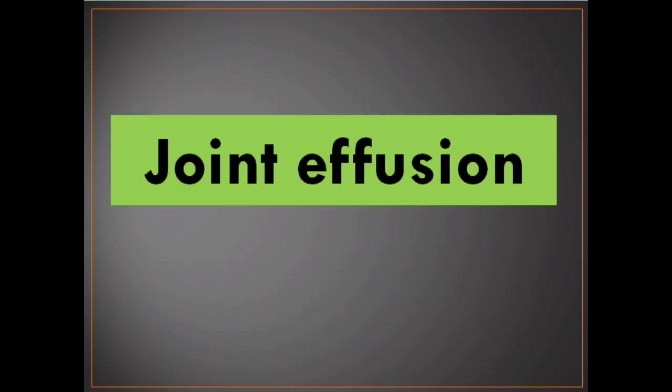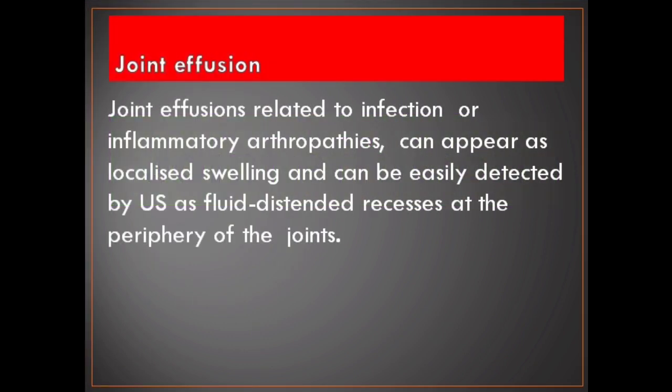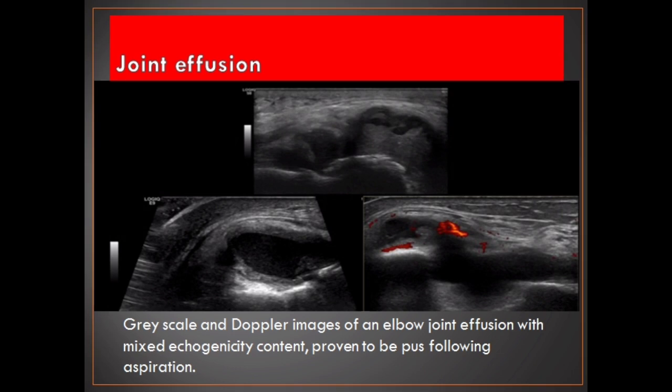Joint effusion. Joint effusions related to infection or inflammatory arthropathies can appear as localized swelling and can be easily detected by ultrasound as fluid-distended recesses at the periphery of the joints. Grayscale and Doppler images of an elbow joint effusion with mixed echogenicity content, proven to be pus following aspiration.